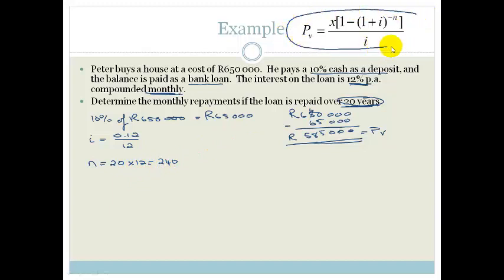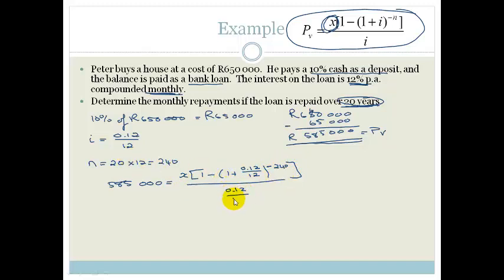Right, so then all we have to do is substitute into this equation to find out what our monthly repayment is going to be. So we've got the PV, which is 585,000, equals x times by 1 minus 1 plus i, which is 0.12 over 12, all to the power of negative 240, all over i, which is 0.12 over 12.